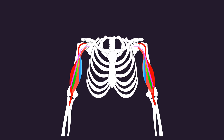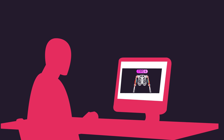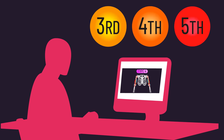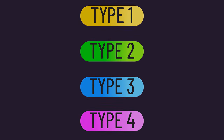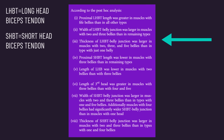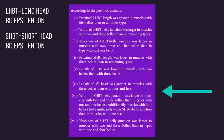Based on this analysis, we can speculate that quite a few watching this will have more than two biceps heads. The type you fall under seems to influence the length, width, and thickness of your biceps heads in various ways.